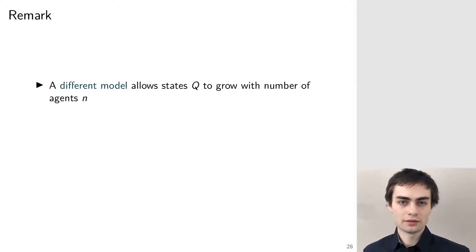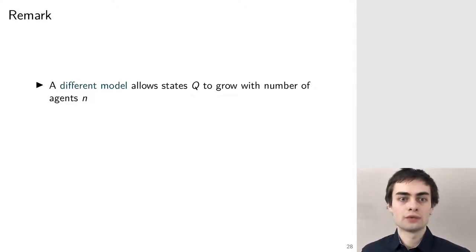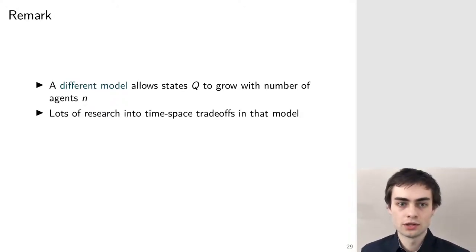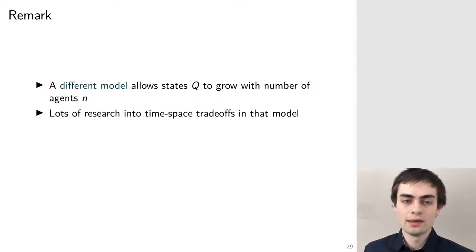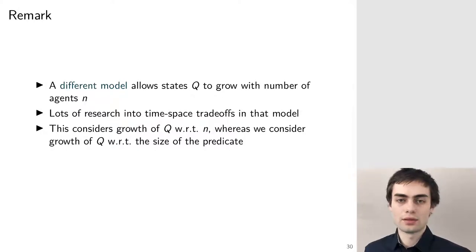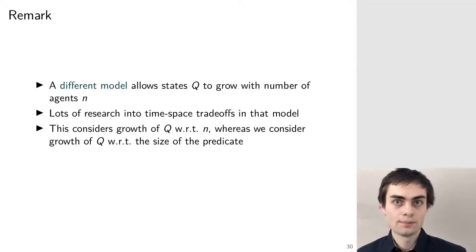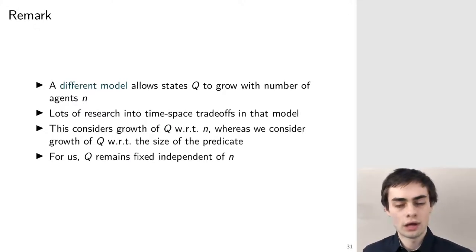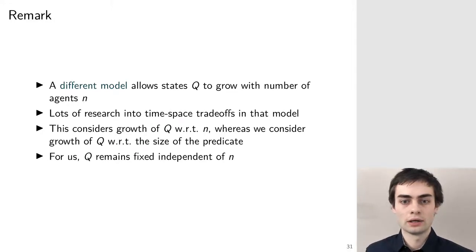A small remark: there is a different model of population protocol, a variant which allows the set of states to grow with the number of agents — something like log n or log log n states. In that model the question is how quickly the set of states grows with regards to the population size. We are concerned with a different question: how quickly does the set of states grow with regards to the predicate we are trying to decide. For our purposes the set of states remains fixed regardless of n.